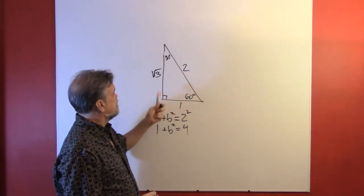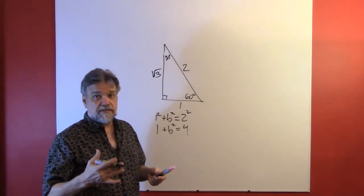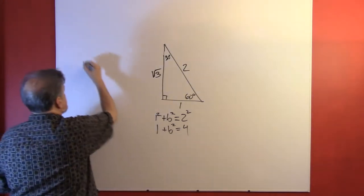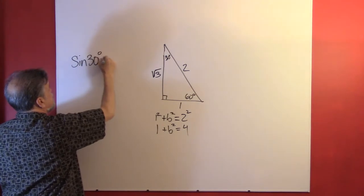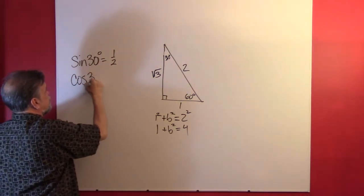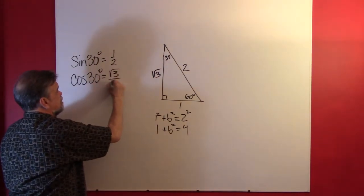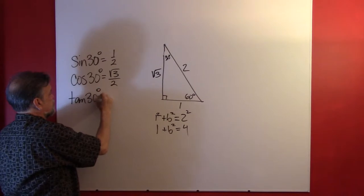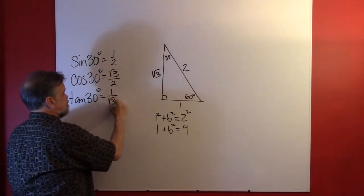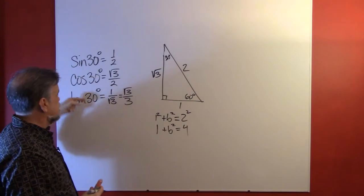So we have a 30-60-90 triangle with sides one, two, and the square root of three. This tells us something about the sine, cosine, tangent, cosecant, secant, and cotangent of 30 and 60 degrees. The sine of 30 degrees — that's opposite over hypotenuse — is one half. The cosine of 30 degrees — adjacent over hypotenuse — is root three over two. And the tangent of 30 degrees — opposite over adjacent — is one divided by the square root of three, which we usually write as square root of three over three.